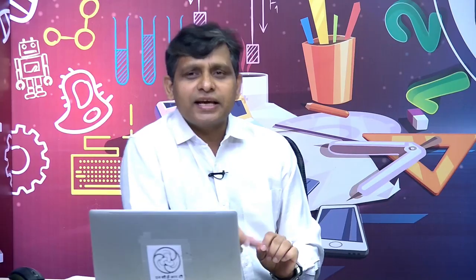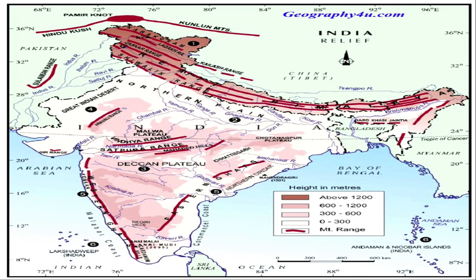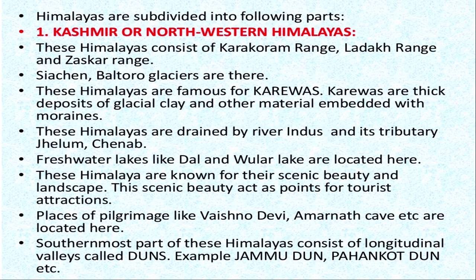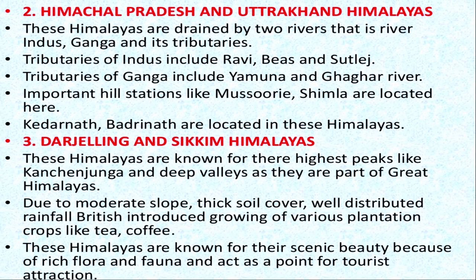Having discussed about the Himalayas, we would also like to know about its historical formation and divisions. There are actually different divisions of the Himalayas. The first is Kashmir or North Western Himalayas, which consist of the Karakoram Range, Ladakh Range, and Zanskar Range. Siachen and Baltoro glaciers are located here, and the famous Karewas formation is found here. Main rivers include Indus, Jhelum, Chenab, Beas, and Ravi.